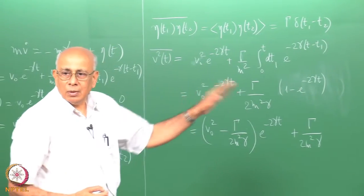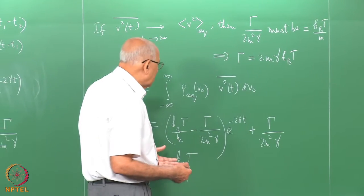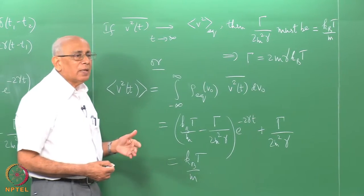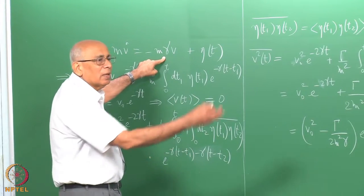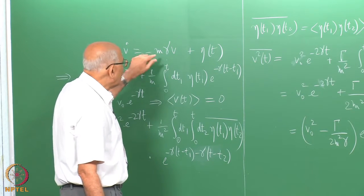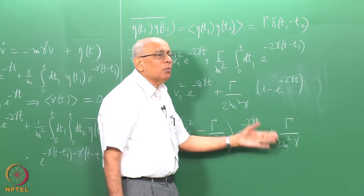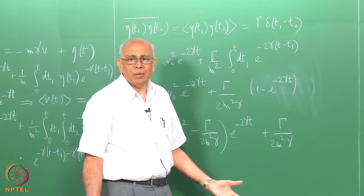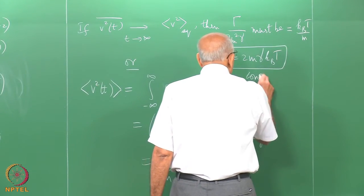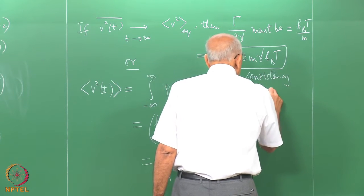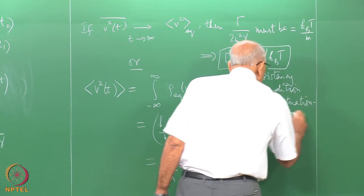As you can appreciate, this is a consistency condition; otherwise you run into inconsistencies. Earlier we ran into a bad inconsistency — the mean square velocity grew linearly with time. We fixed that by introducing a damping term. The moment you put in such a term, the runaway behavior stops. It tends to a constant, and consistency demands that constant equals the equilibrium value. This very important relationship is called the fluctuation-dissipation relation.